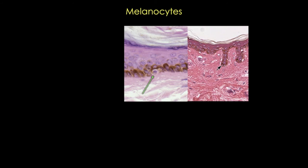Because melanocytes transfer their melanin to keratinocytes, the keratinocytes actually contain more melanin than the melanocytes themselves. So melanocytes actually look almost clear—not always, but most of the time. We can distinguish these molecularly by looking at melanocyte-specific proteins such as tyrosinase or microophthalmia transcription factor, for example.